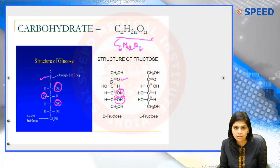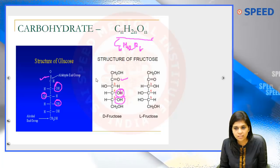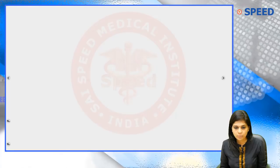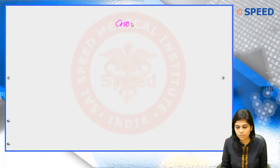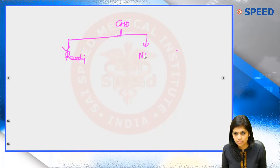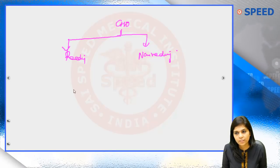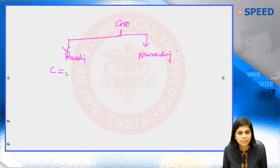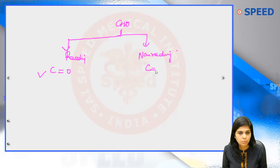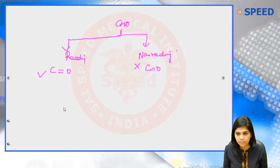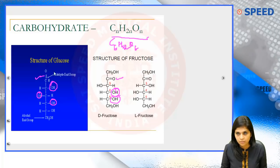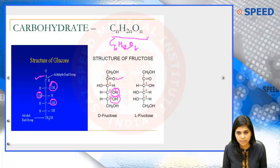These carbohydrates are broadly classified as reducing and non-reducing sugars, depending upon the presence or absence of reducing property, which in turn depends on the presence or absence of a free carbonyl group. To make it simple: any carbohydrate that has a C double bond O group will be reducing, and any carbohydrate that does not have a C double bond O group will be non-reducing. That is why glucose, with a carbonyl group at carbon one, and fructose, with a carbonyl group at carbon two, are both considered reducing sugars.